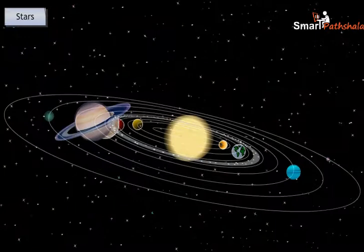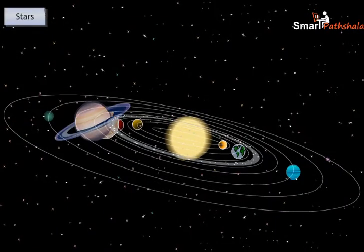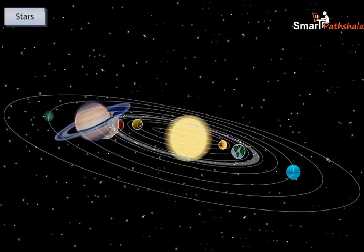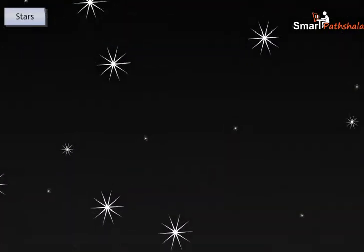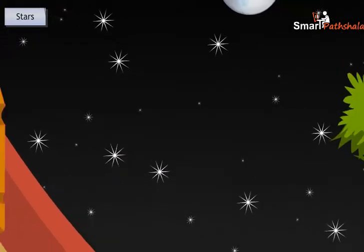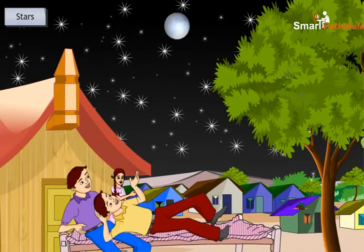In this chapter we will learn about the stars and solar system, including the Sun, the planets, and satellites. First, let us know about stars. During summer, most of us prefer sleeping on the roof of the house or terrace in the nights because we can see a large number of bright stars and moon in the sky.